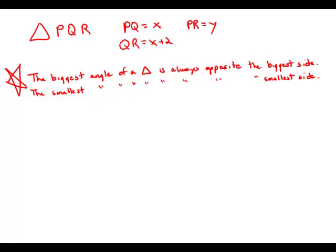The smallest angle of a triangle is always opposite the smallest side. And so if we can figure out the biggest side, de facto we would know the biggest angle. That's very important. So now we can move on to the statement.